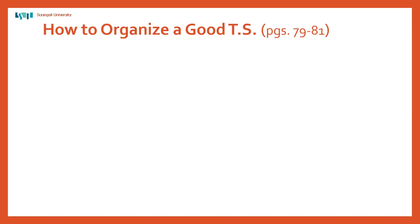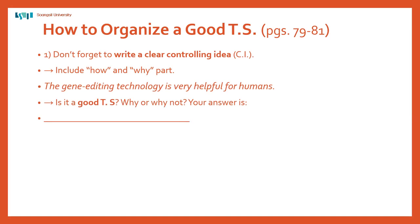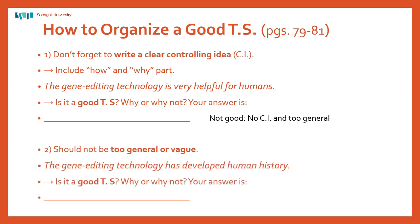Let's go through each of these. Page 79 continues on pages 80 and 81. Number one: don't forget to write a clear controlling idea. The example sentence is 'The gene editing technology is very helpful for humans.' Is it a good topic sentence? No — the controlling idea is not there and it's too general. How is it helpful? Number two: it should not be too general or vague. 'The gene editing technology has developed human history' — how? It doesn't tell us any specific information, so it's too vague with no controlling idea.